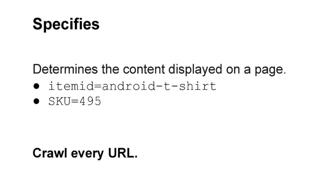The next parameter is specifies. Specifies determines the content displayed on the page — for example, item ID equals Android T-shirt, or SKU equals 495. The specifies parameter is responsible for the actual content, and so you'll likely select 'crawl every URL.'